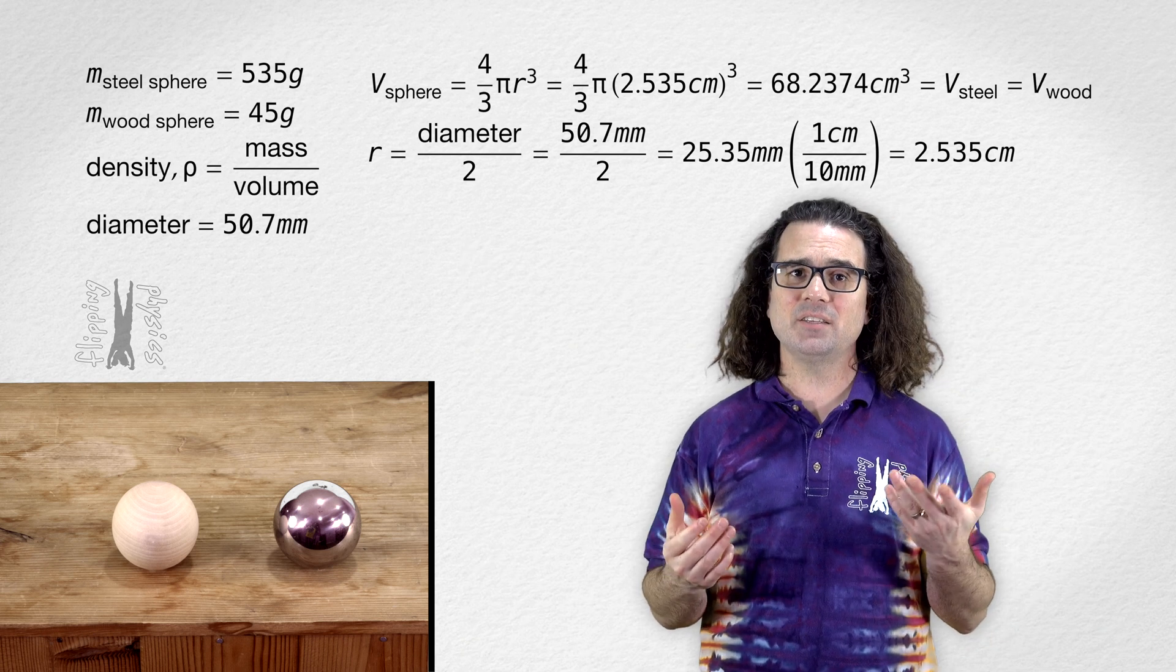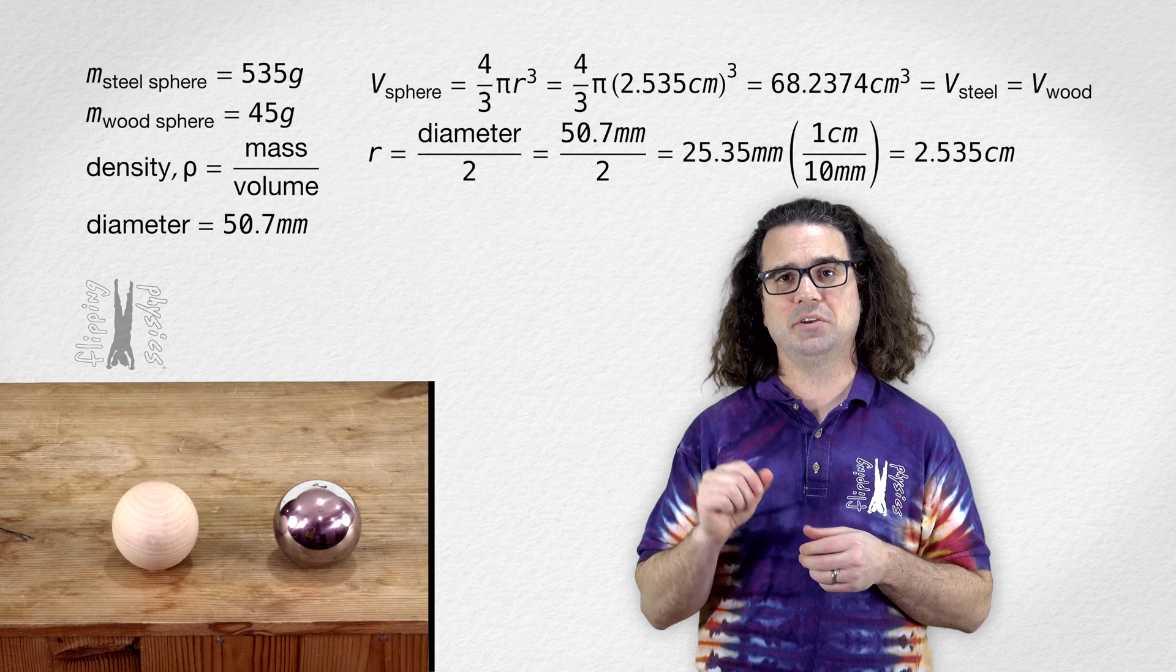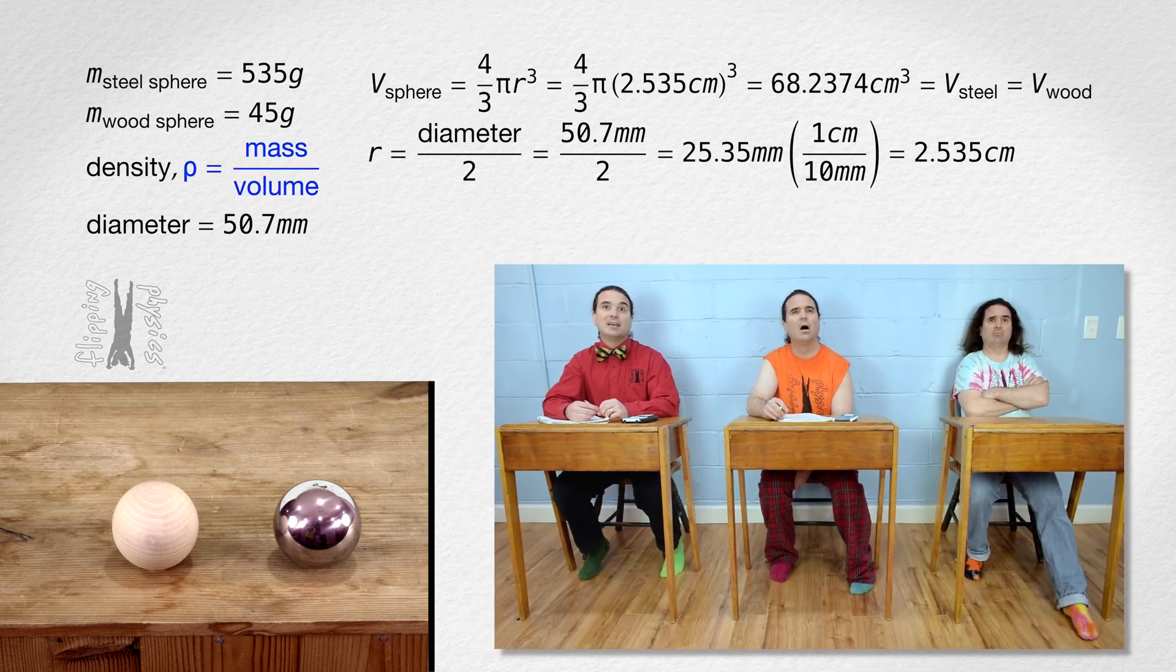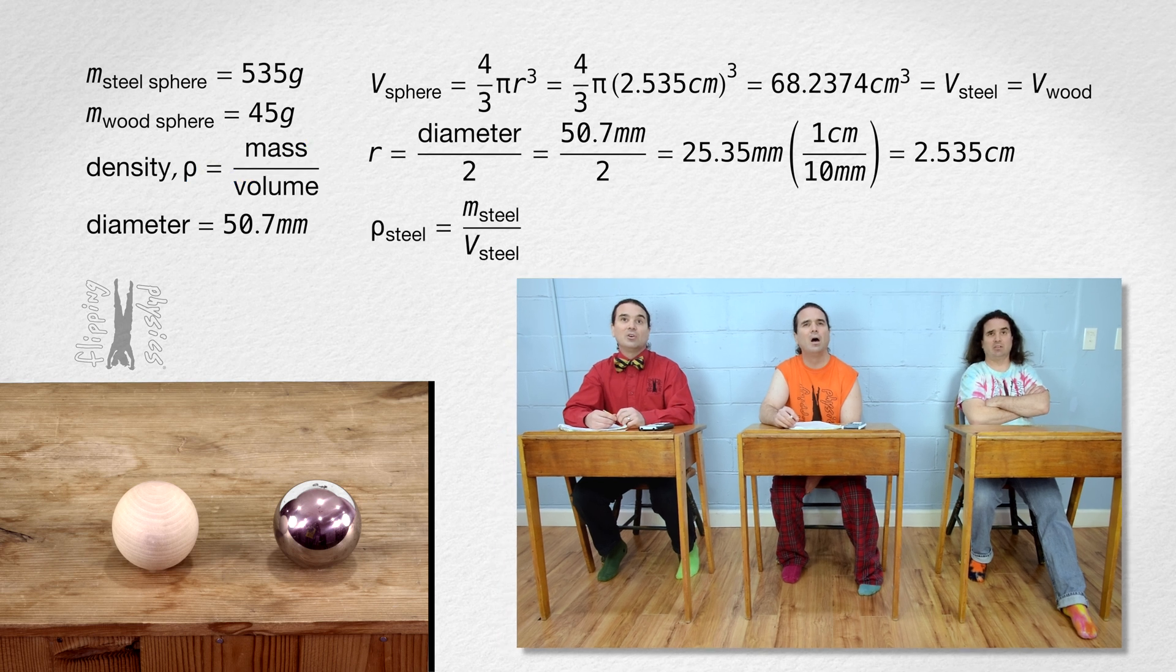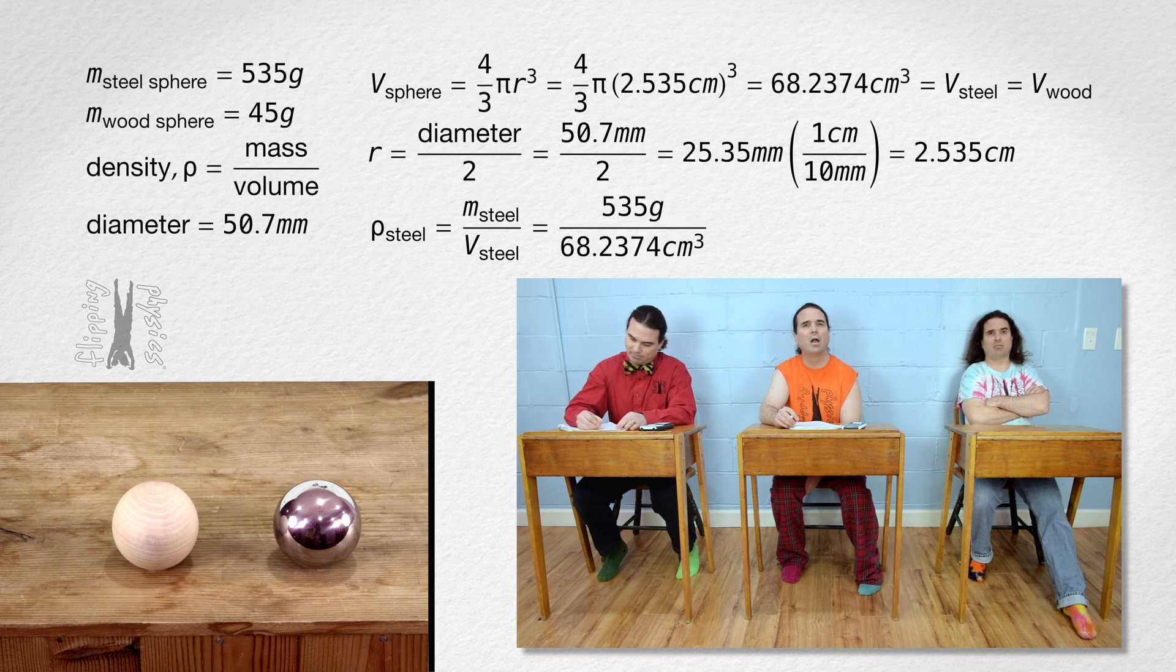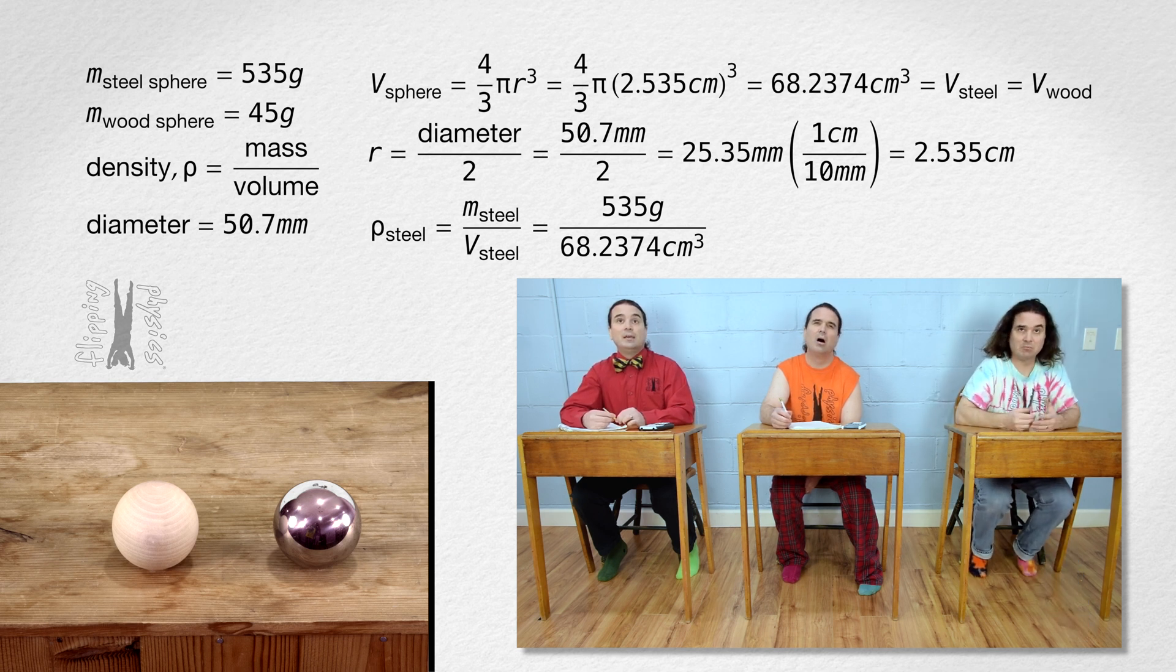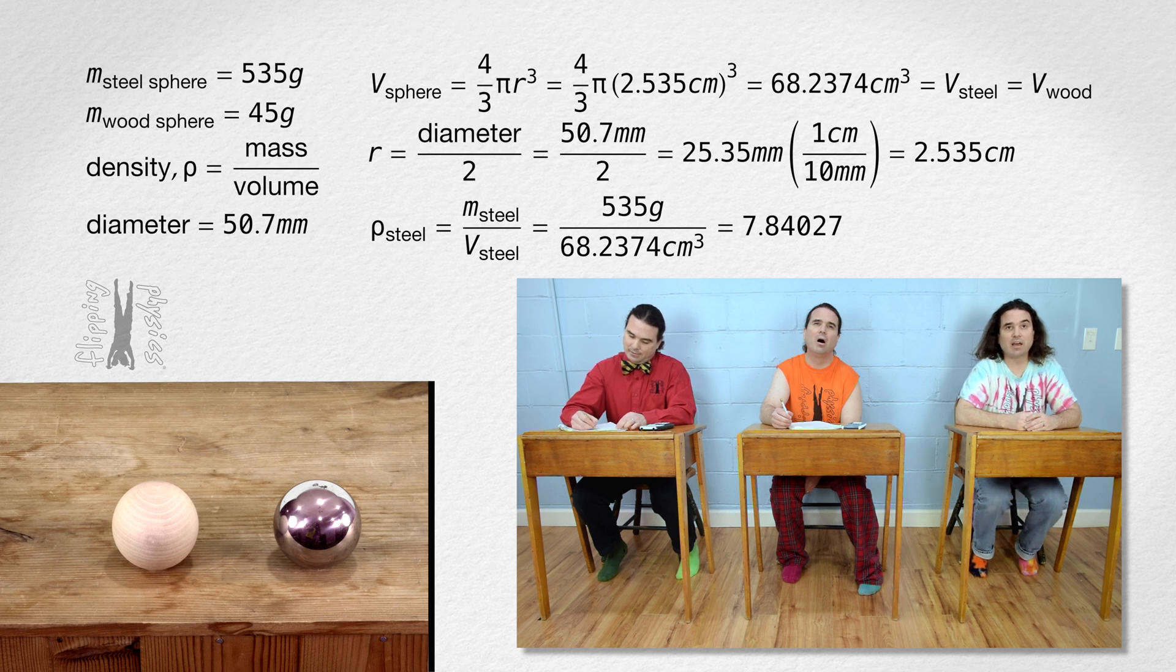Bo, please determine the densities of the steel and wood spheres. Sure. Density equals mass over volume. So, the density of the steel sphere equals the mass of the steel sphere over the volume of the steel sphere, or 535 grams over 68.2374 cubic centimeters, which equals 7.84027, or approximately 7.84 grams per cubic centimeter.